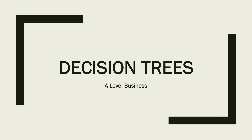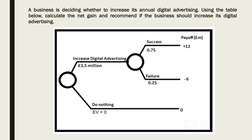Let's have a session on decision trees. This is for A-level business. The question is: a business is deciding whether to increase its annual digital advertising. Using the table below, calculate the net gain and recommend if the business should increase its digital advertising. Take a look at the decision tree below and then try and work out the answer.